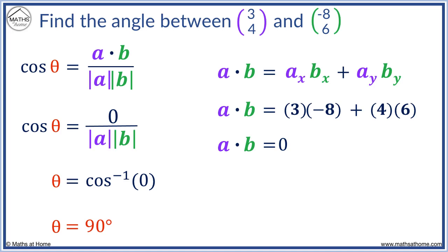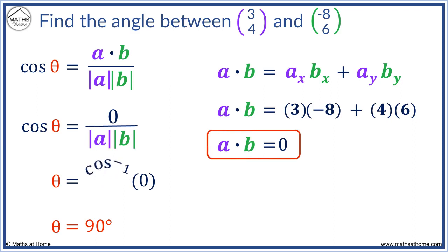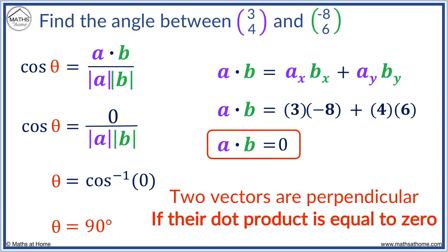The vectors meet at 90 degrees — we say the vectors are perpendicular. This is a special rule: if the dot product of two vectors is 0, we get inverse cos of 0, which is 90 degrees. Therefore two vectors are perpendicular if their dot product is equal to 0.